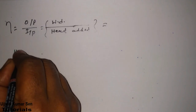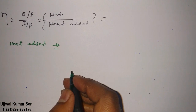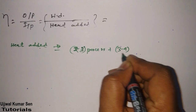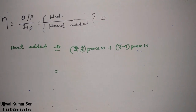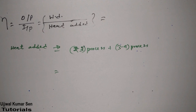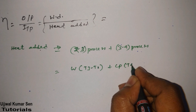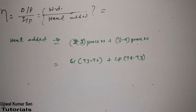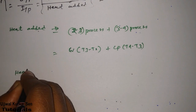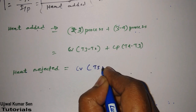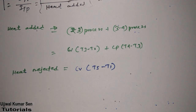Heat added = Cv(T3 − T2) for the constant volume process 2→3, plus Cp(T4 − T3) for the constant pressure process 3→4. Heat rejected occurs in only one process, 5→1, which is constant volume, so heat rejected = Cv(T5 − T1).